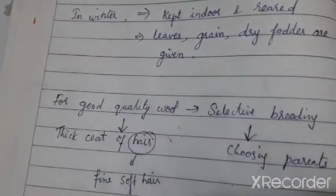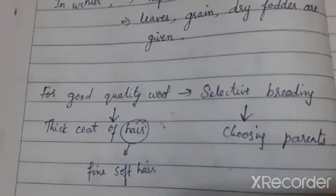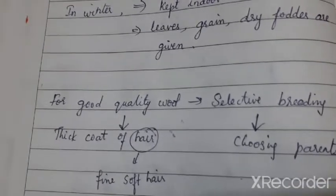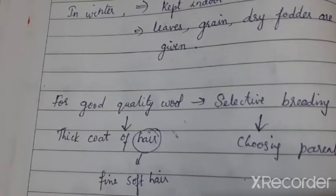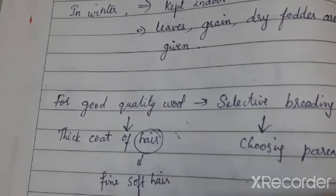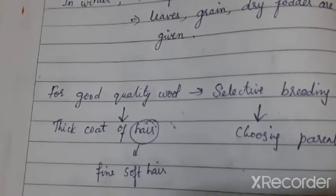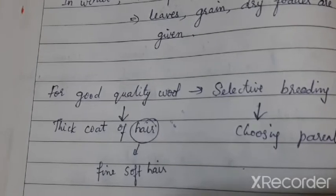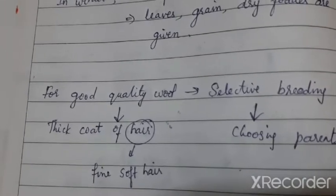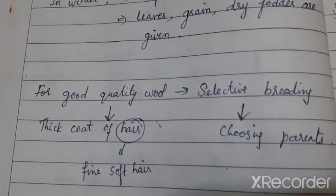Next, we are going to see how the sheep are bred. Breeding means to produce offspring. For good quality wool, we need a thick coating of hair. We discussed already that hair is of two types — beard hair and fine soft hair lying on the skin layer. We prefer fine soft hair for wool preparation. To obtain good quality wool with fine, soft, thick hair, we need to choose animals that have fine soft hairs.